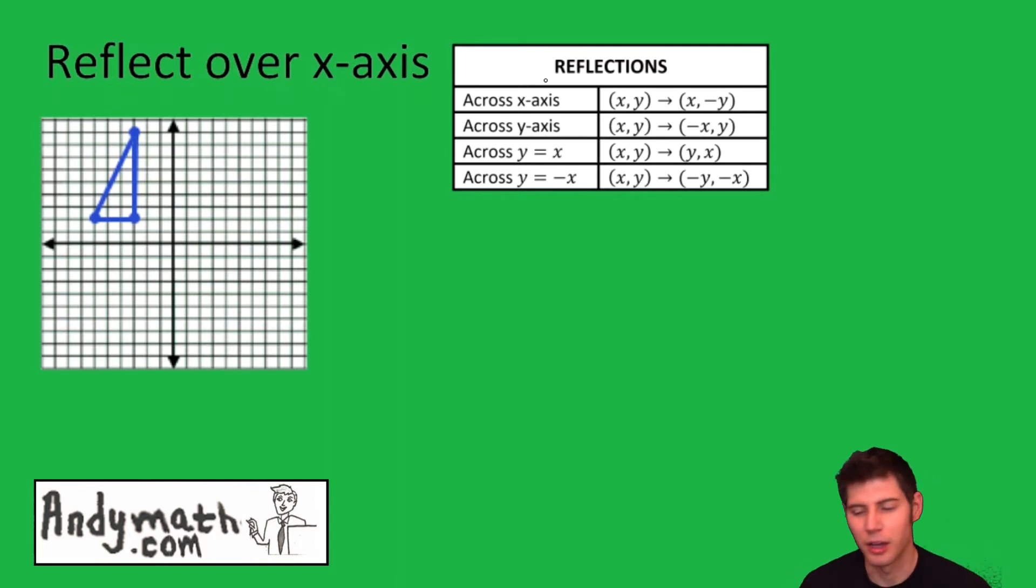So first let's do the eyeball. So the x-axis is this axis right here. So if we reflect over it, we can just count 1, 2, 1, 2. You're always going to go perpendicular to the axis.